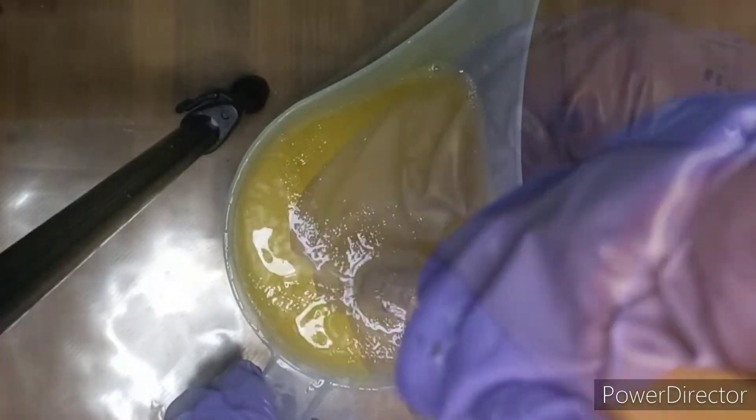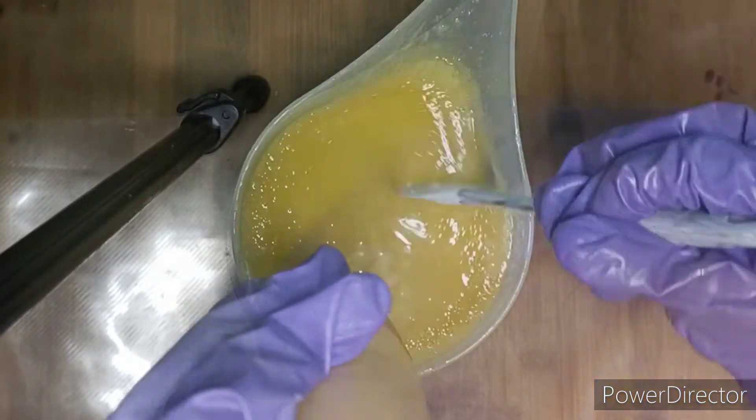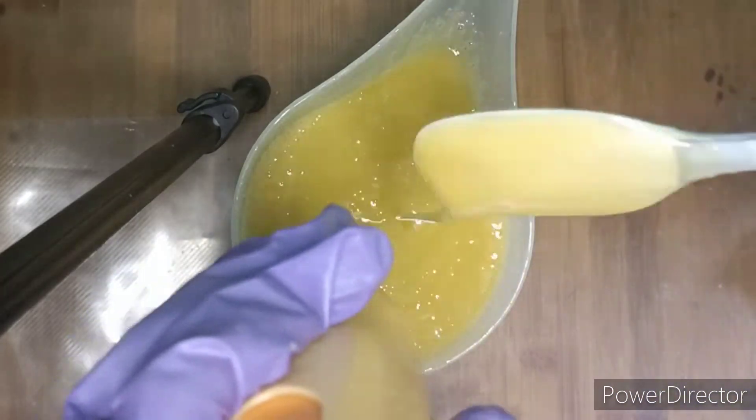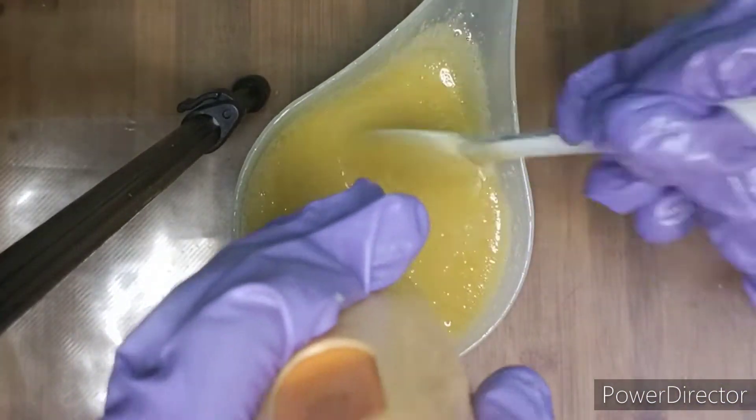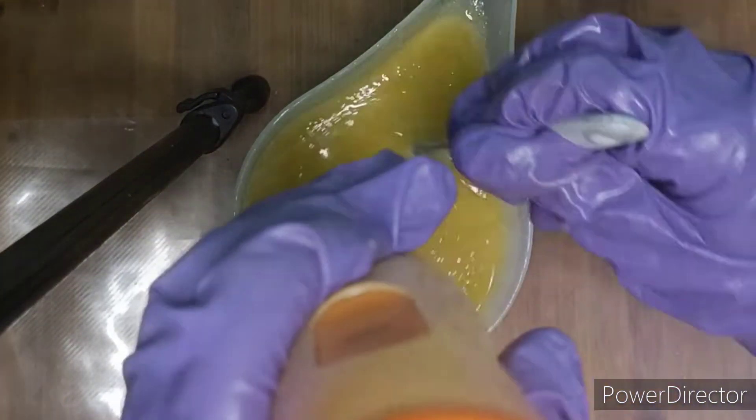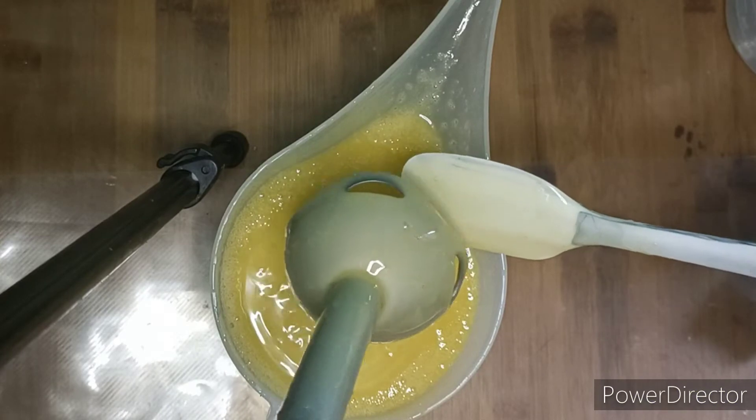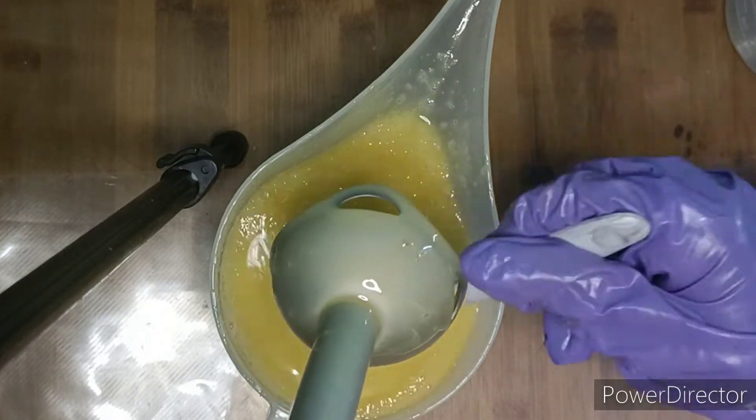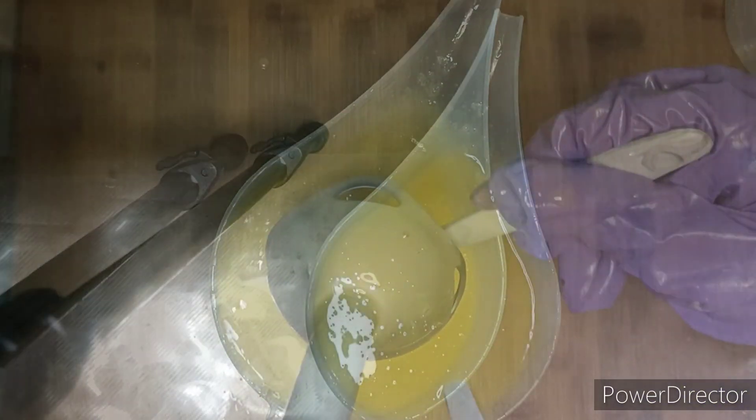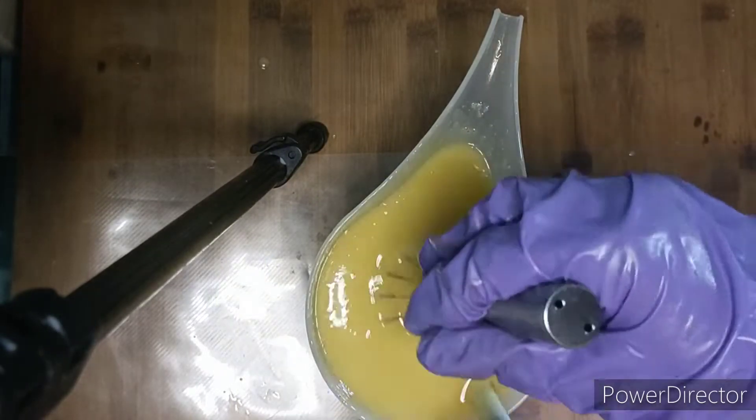To check if my soap batter is at the right emulsion or not, and when I arrive at the right emulsion, I stop using the stick blender and start to use my spatula and hand whisk.